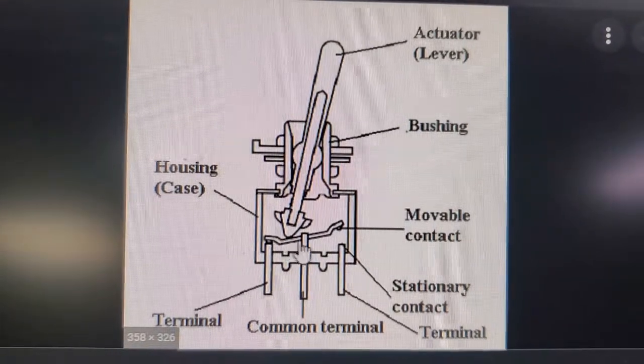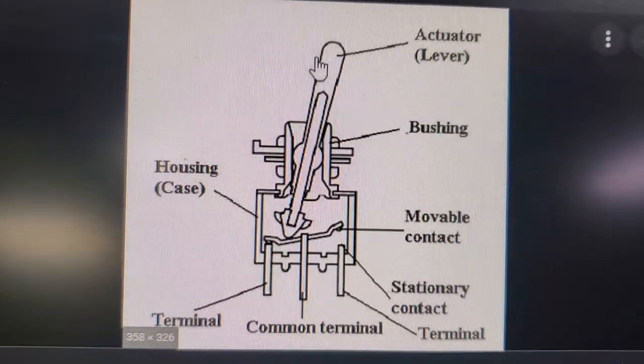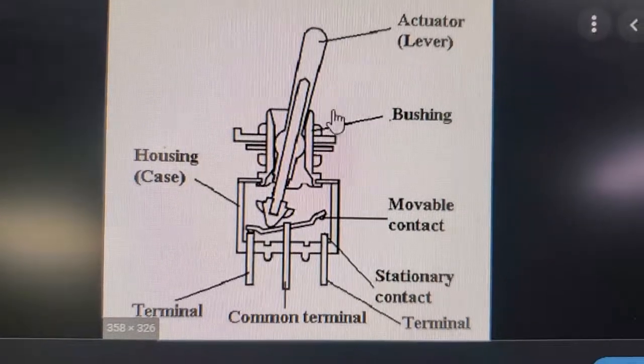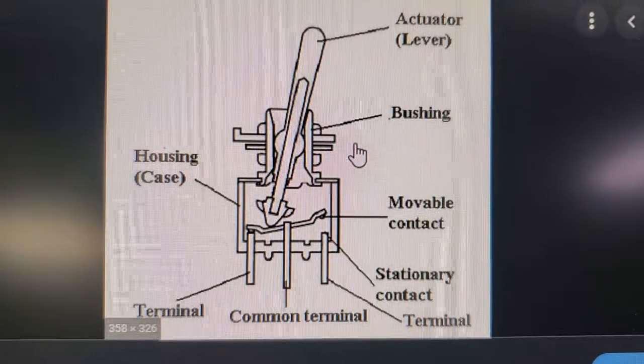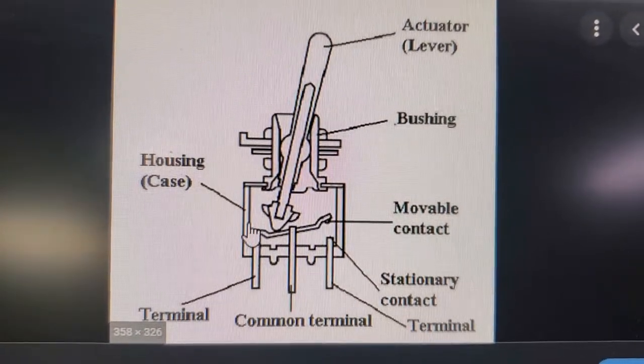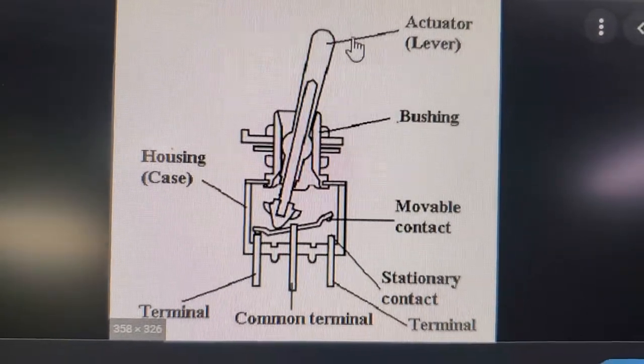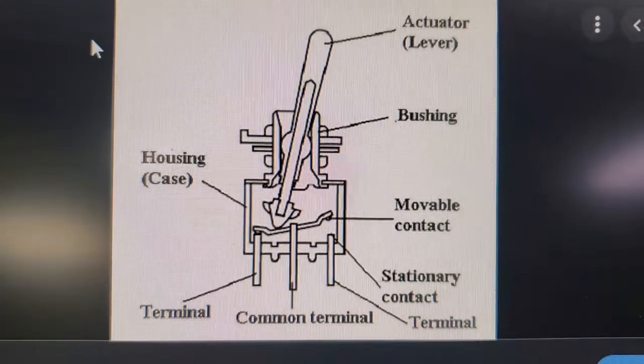As you can see here, this is just one example. This is a rocker switch that actually has a rocker in it. When you push the lever this way, or if it was in the case of the one that looks like yours, if you push down on this side it moves the pivot and puts pressure on the opposite side of what you're pressing.